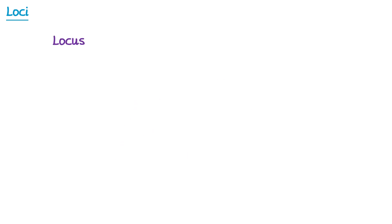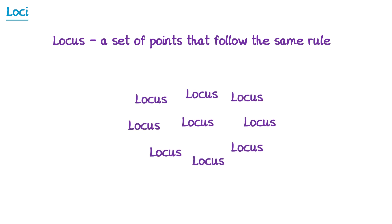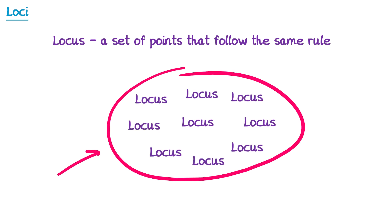A locus is a set of points that follow the same rule. The word loci is simply the plural of locus, so you could have one locus, but if you have lots of them then all of these are called loci.